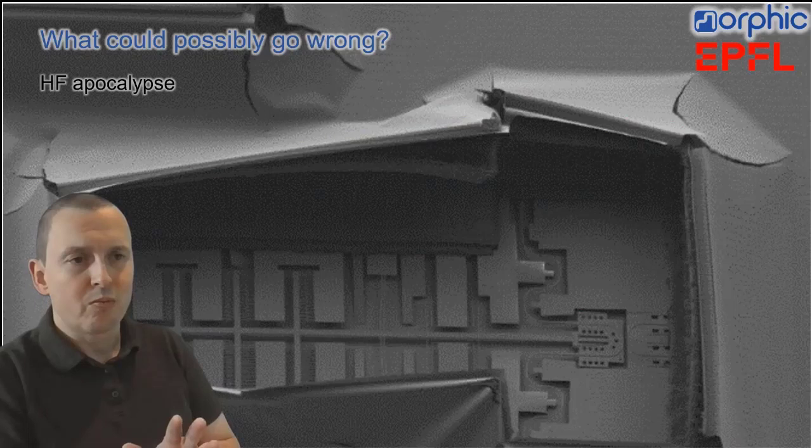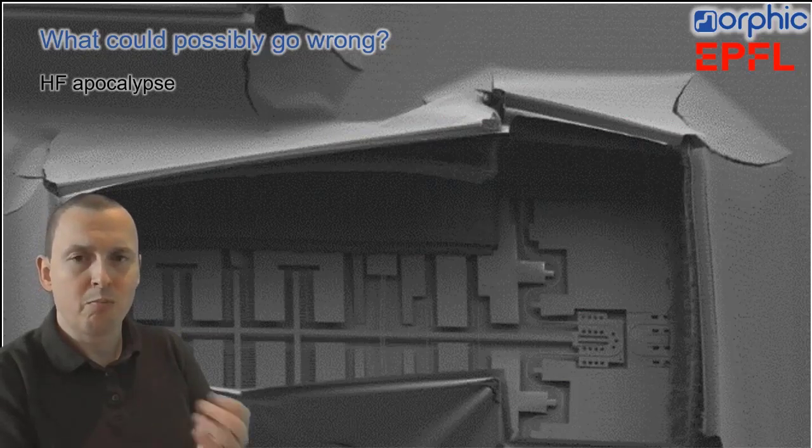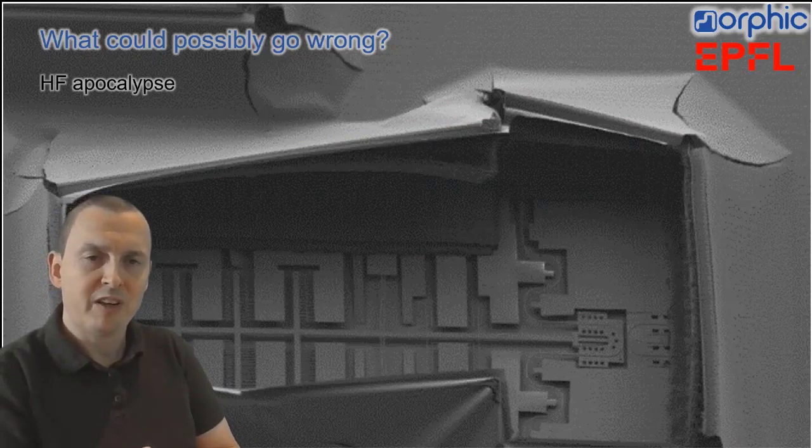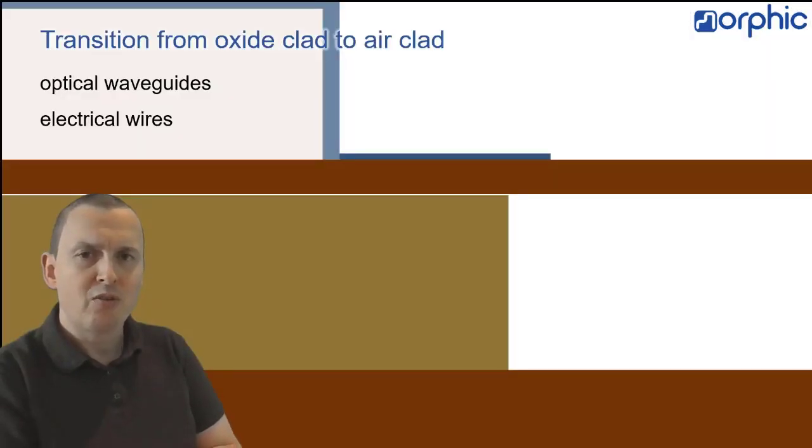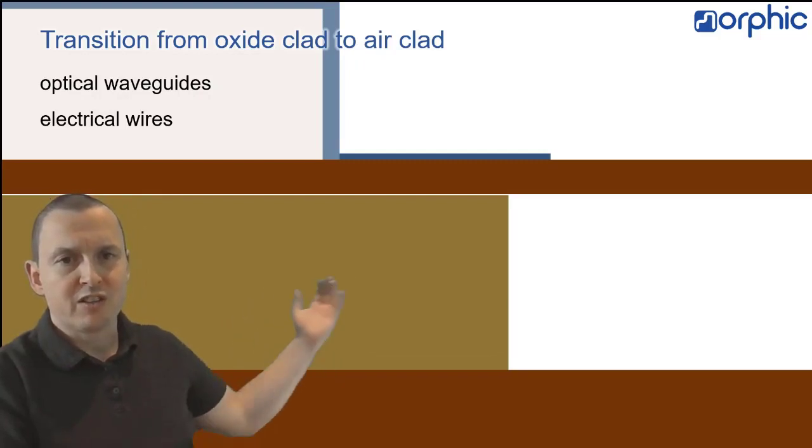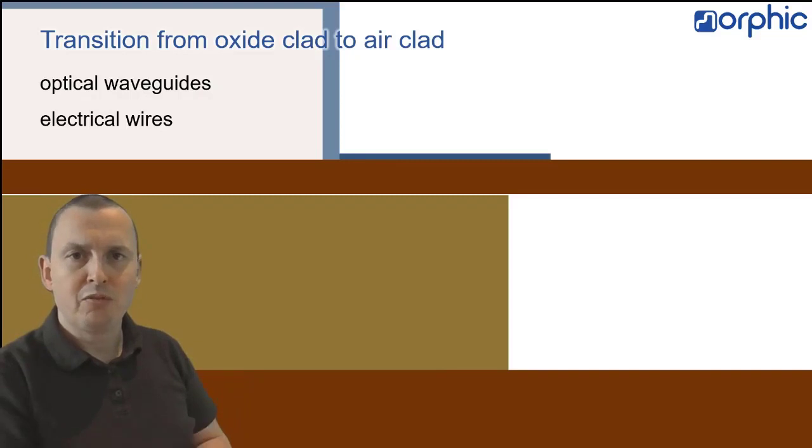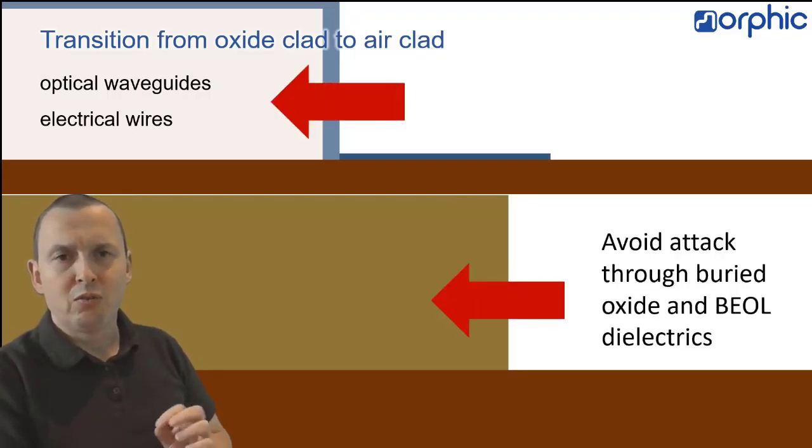So, we have this process, we get some nice results now, but there's a new challenge, because we want to combine these MEMS devices, which are outside of the oxide and freestanding, we want to combine them with the devices that are already there in the silicon photonics platform. So, we have to transition from oxide-clad devices to air-clad devices. And we need to do that both for the optical waveguides, as well as for the electrical wires that electrically connect the micro-electromechanical system. And we have to engineer these transitions without having any possibilities for the vapor HF to attack the oxide at the top, or penetrate too deep from the bottom.